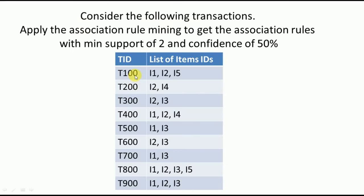Here we have been given 9 transactions. In each transaction a customer will buy a certain set of products. The products are marked with I1, I2, I3, I4, and I5. These are the 5 products, and out of these 5 products, in each transaction the customer will buy a certain set of products.